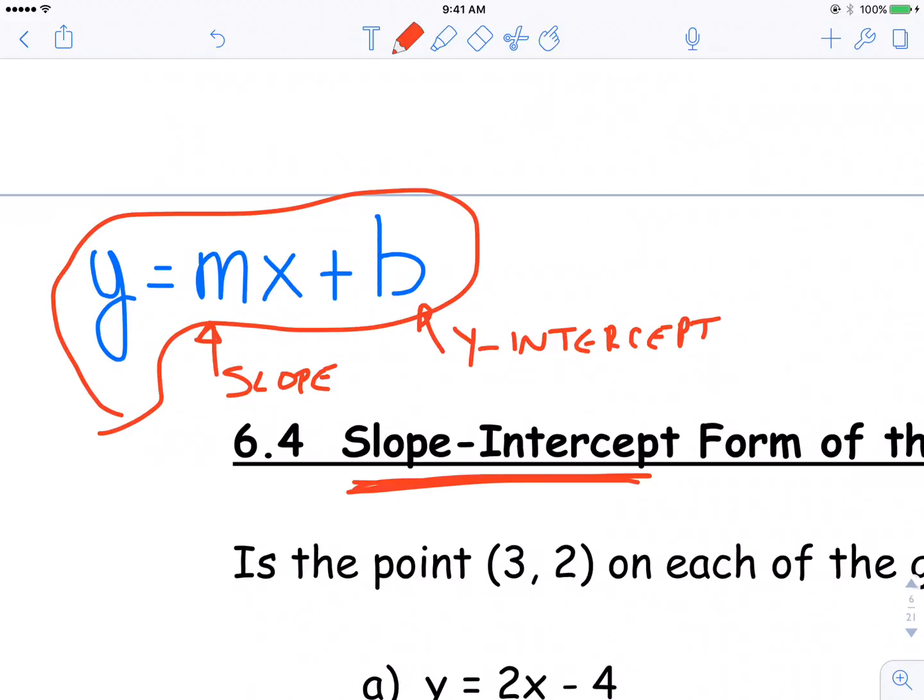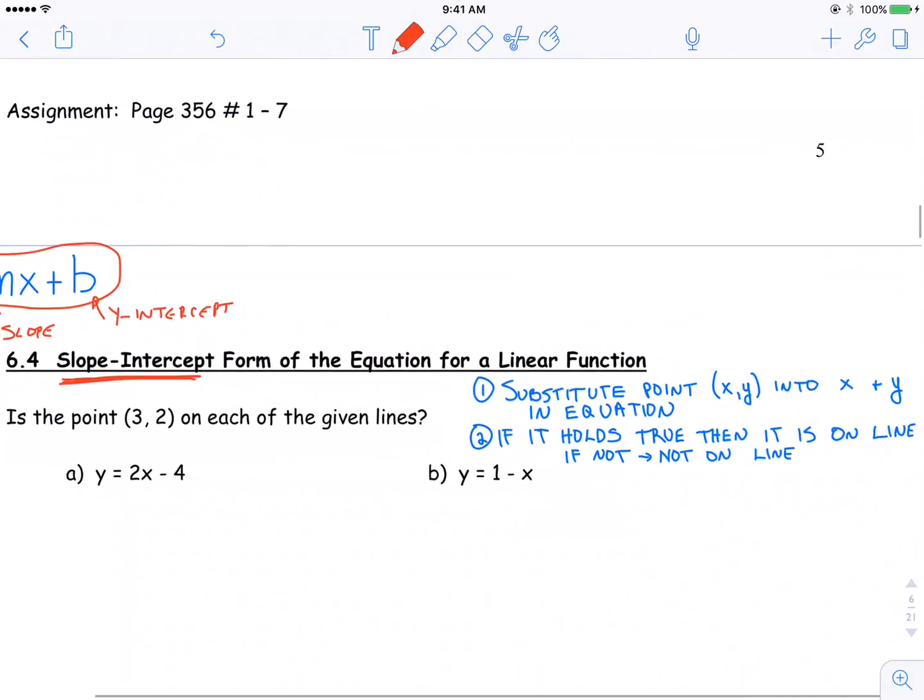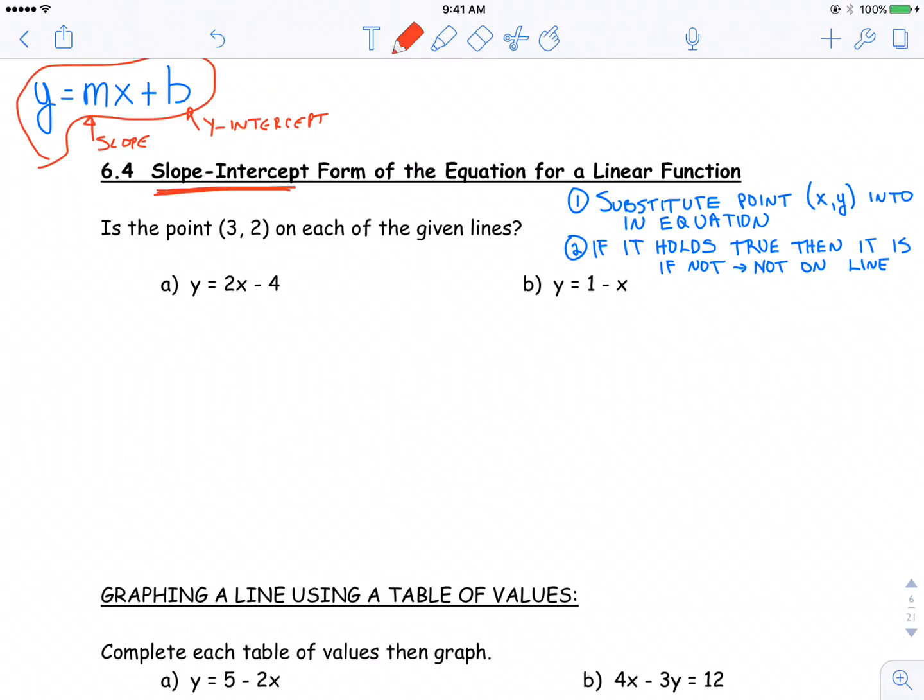It's sometimes referred to as the slope-y-intercept form of the equation, so make sure that you're a little bit familiar with both. So we're going to be working with this form of the equation for the next section here, 6.4, the slope-intercept form of an equation for a linear function. First question, is the point (3, 2) on each of the given lines?